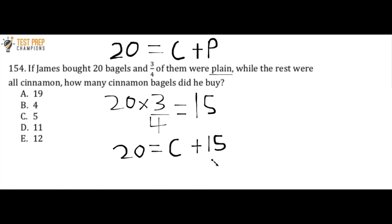So C plus 15. Well, to get that C alone, I want to get rid of the 15. So I'm going to have to do the opposite of addition, which is subtraction. And whatever I do to one side, I also have to do it to the other side as well. So if I do 20 minus 15, I'll see that 5 equals C. And the correct answer here is C.